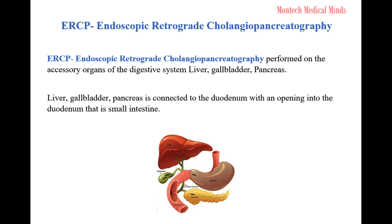The liver, gallbladder, and pancreas are connected to the duodenum, with an opening into the duodenum — that is, the small intestine. The liver produces bile juices and stores them in the gallbladder, and the pancreas releases digestive enzymes.